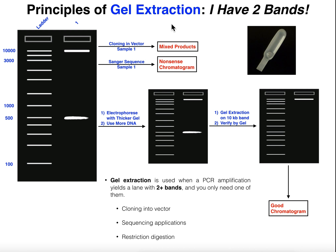But what happens if you actually run a sample after you PCR amplify it and you end up with two bands like this? Sometimes this actually happens — you can have more than two bands — and this is a really big problem if you want to clone, say, this top gene right here, this bigger one at 10,000 base pairs, 10 kilobases. What happens if you want to clone this into an expression vector and force the expression of its protein in a bacterium? Well, the problem is you've got two bands here, it's not pure, so you're going to get a mixture of products and probably some nonsense.